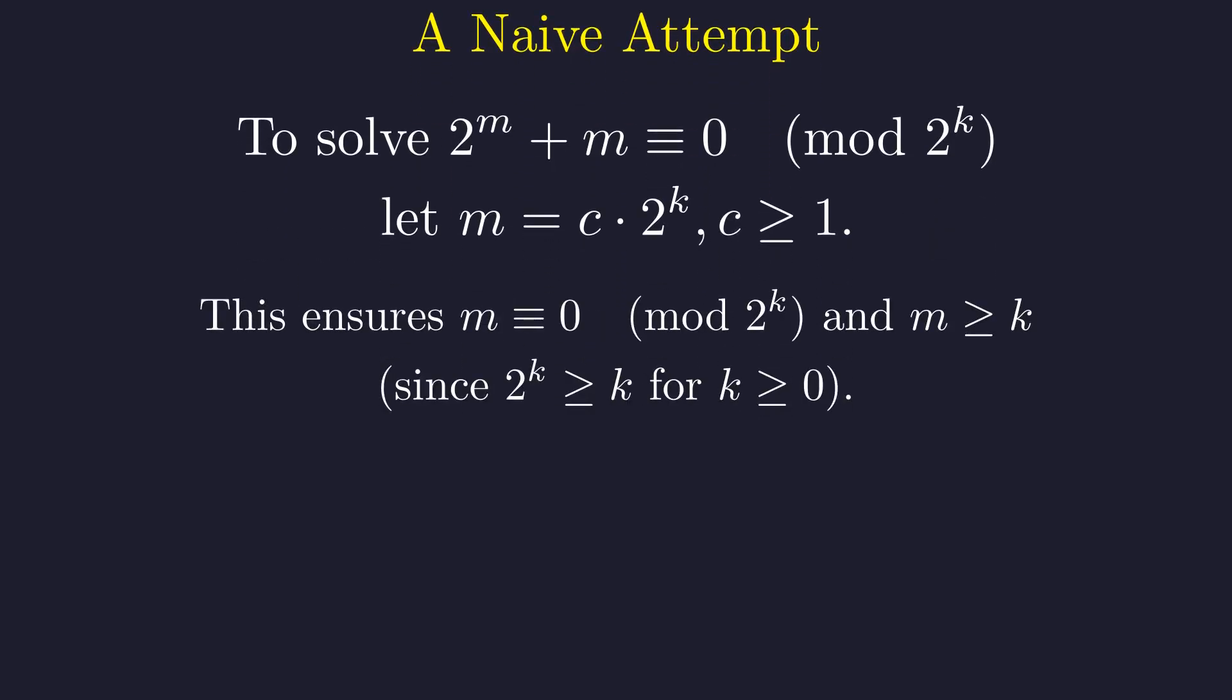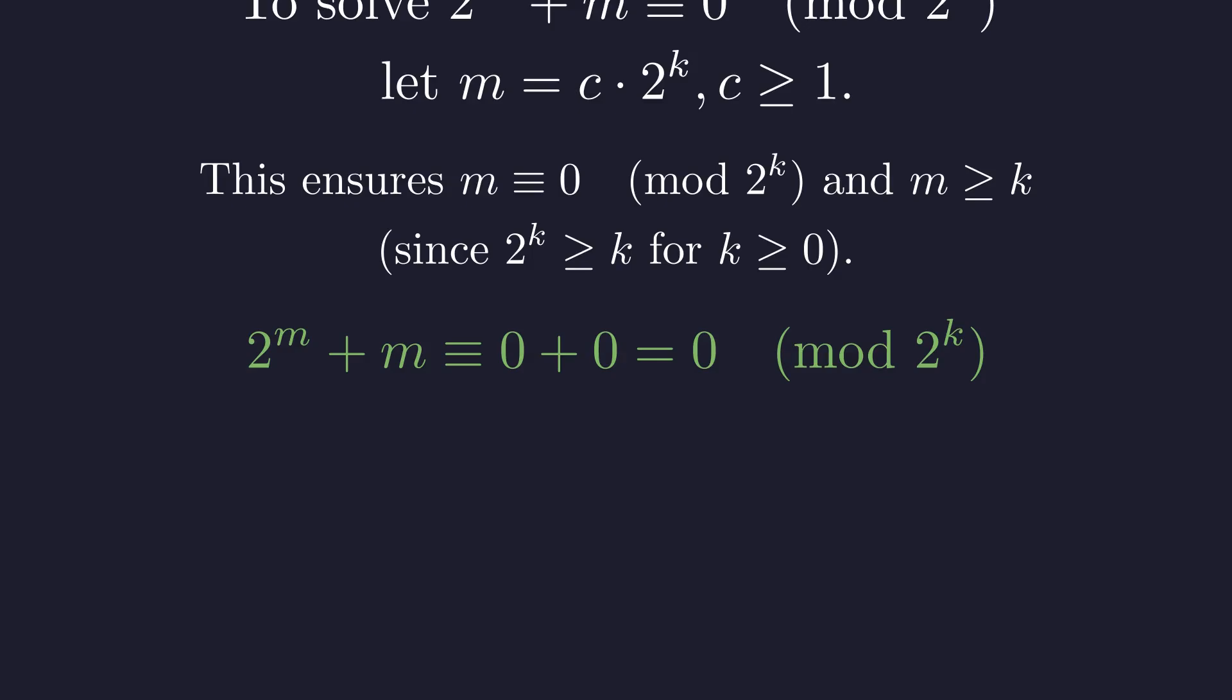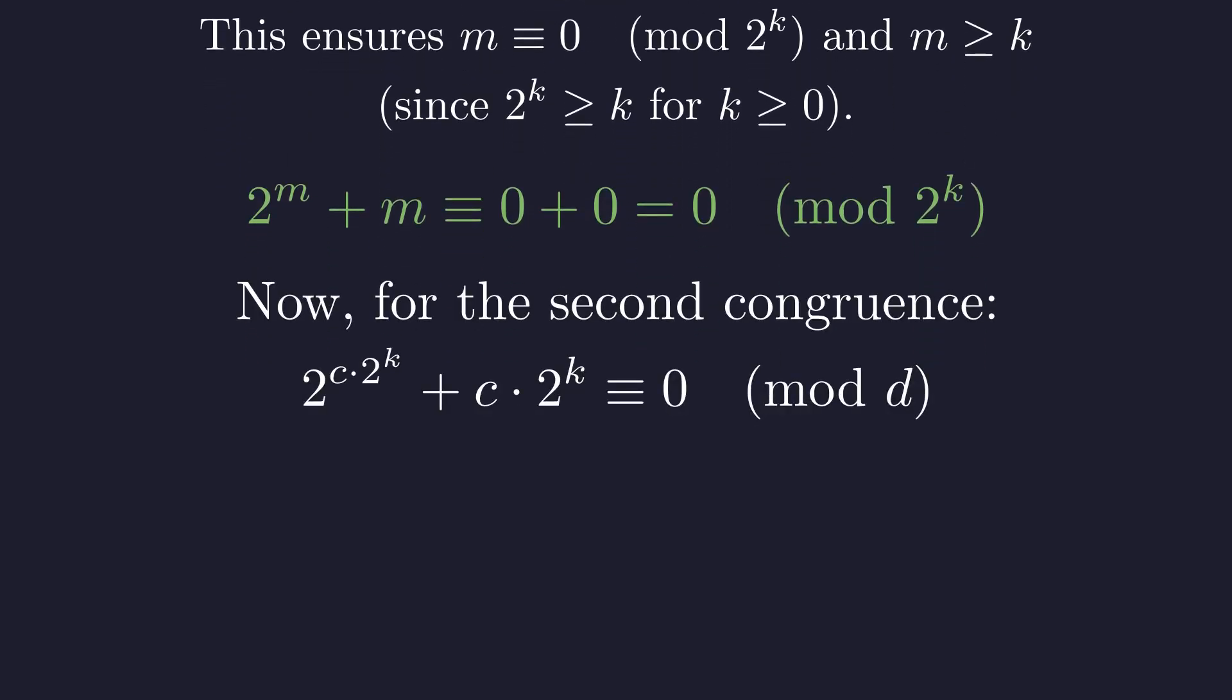This choice ensures m is congruent to 0 modulo 2 to the k and that m is at least k. Thus, 2 to the m is congruent to 0 and m is congruent to 0. The first congruence is satisfied. But when we substitute this into the second congruence, we are left with this. The variable c appears both in an exponent and as a linear term. There is no straightforward way to solve such an equation for c. This approach hits a wall.